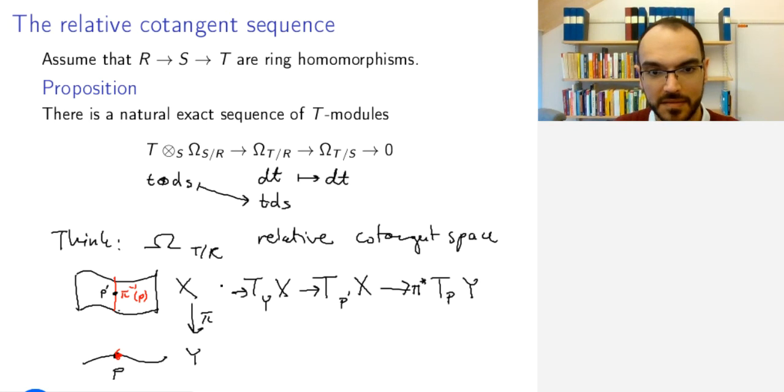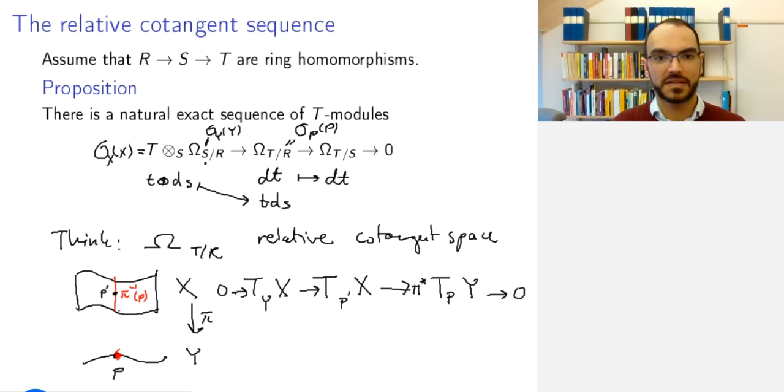And by dualizing, then I get the cotangent sequence. This pullback corresponds to tensoring with the, T should here be my OX of X, and S is my OY of Y, and R is OP of P. So, dualizing everything and looking at these as functions from the tangent space to my field, I get roughly this sequence.